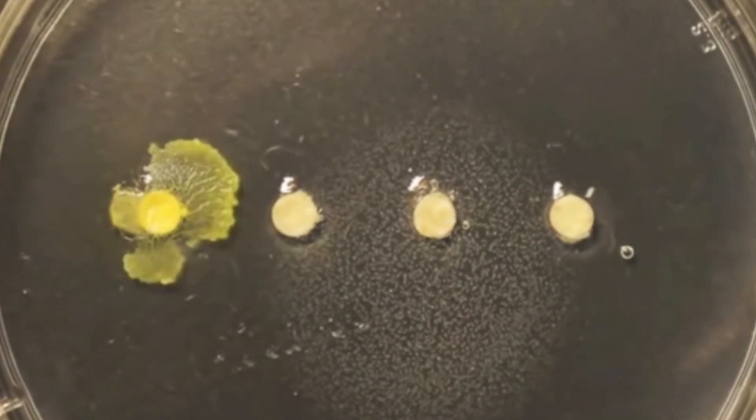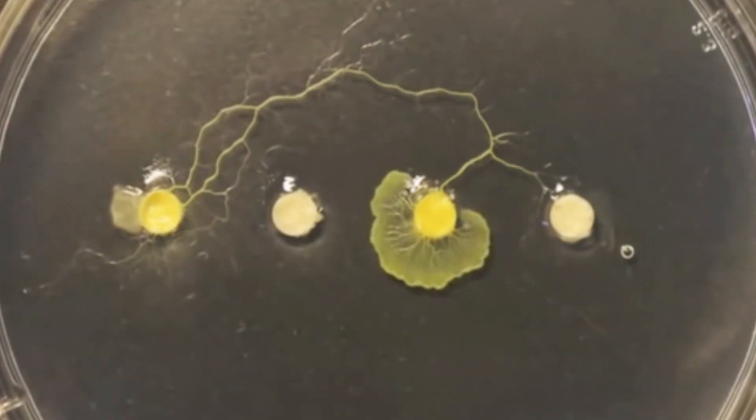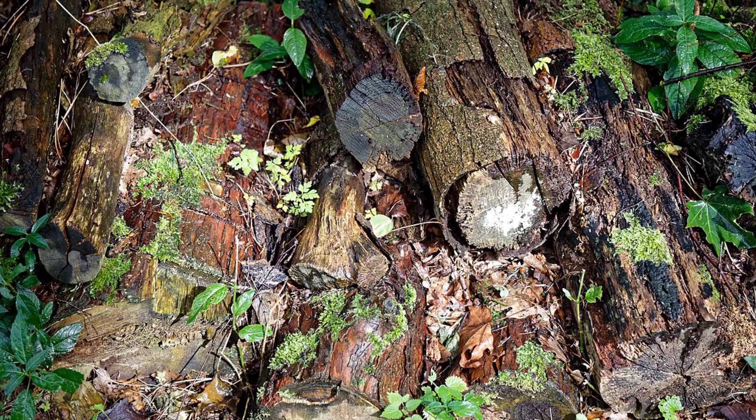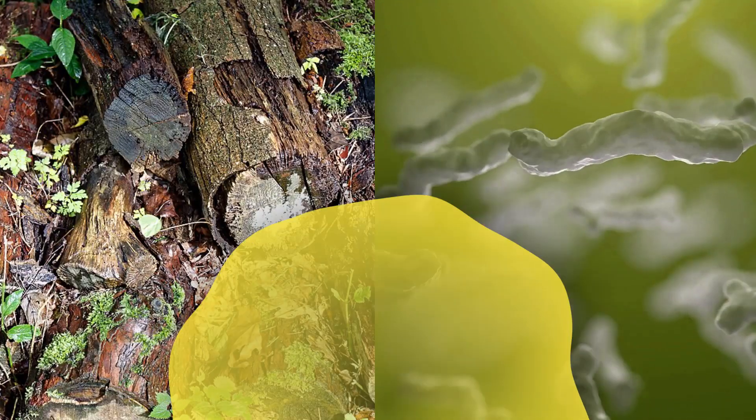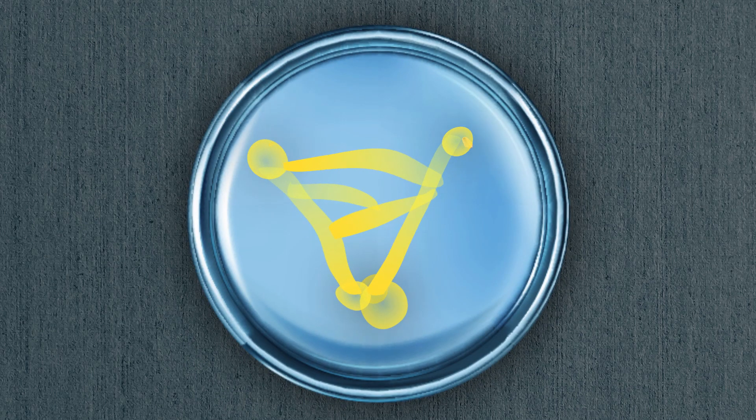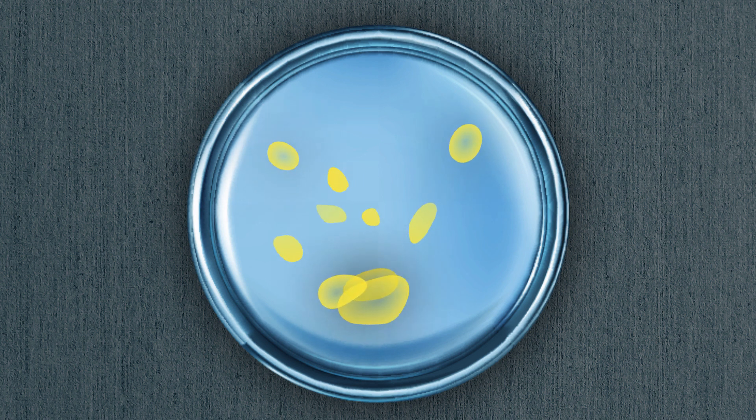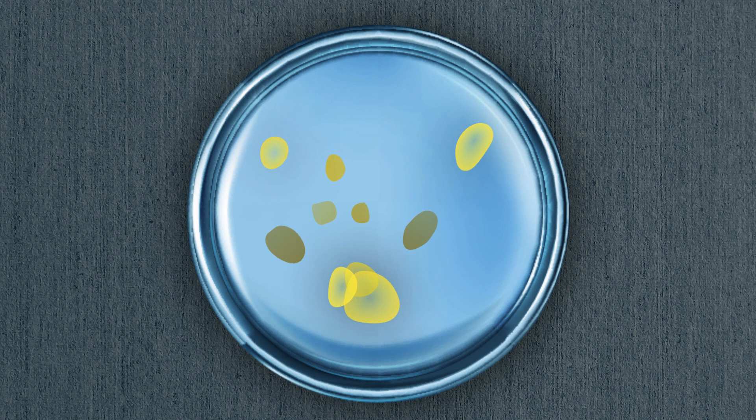As its tendrils probe its surroundings, any food that is found, be it decaying vegetation or another microorganism, is enveloped and digested with secreted enzymes. If the food sources are eventually depleted, the slime changes form again in one incredible final act.